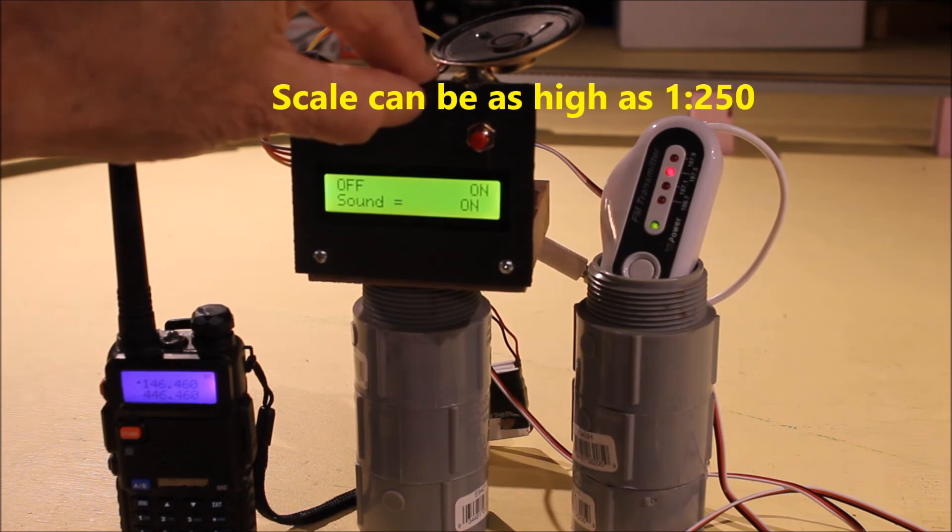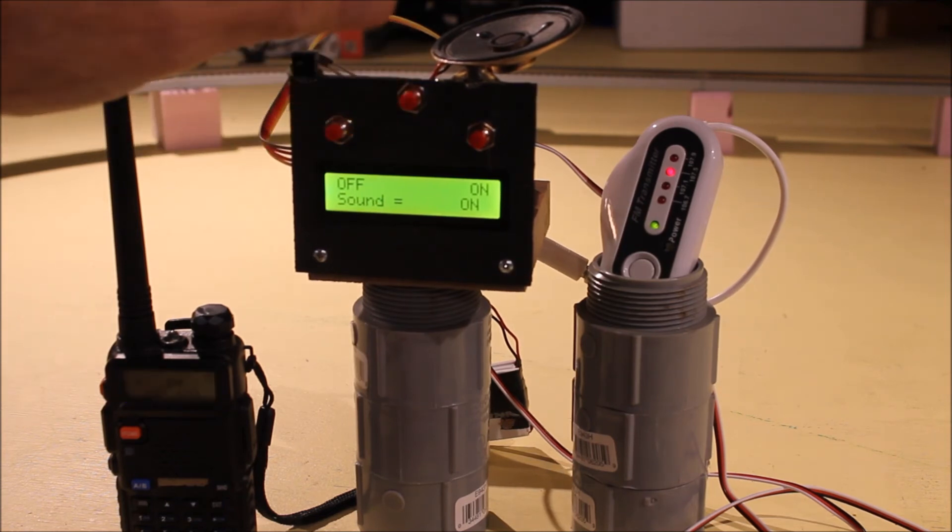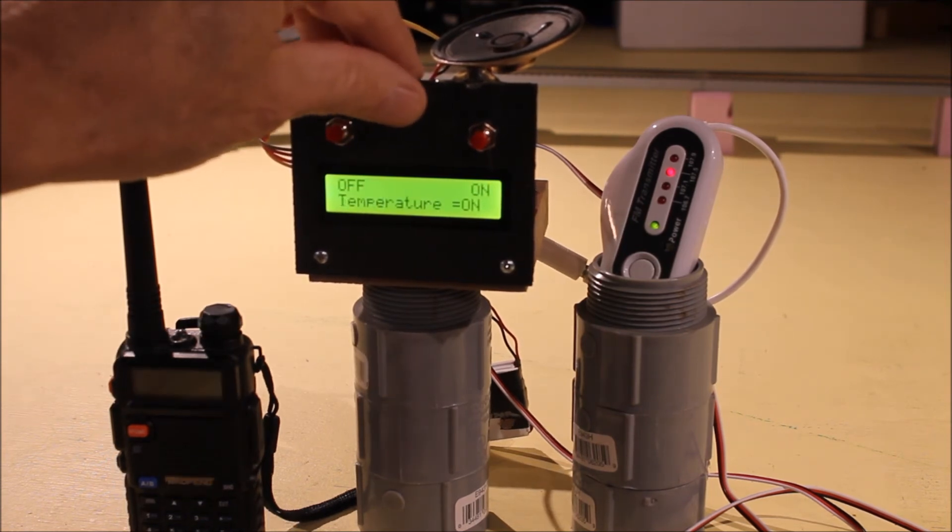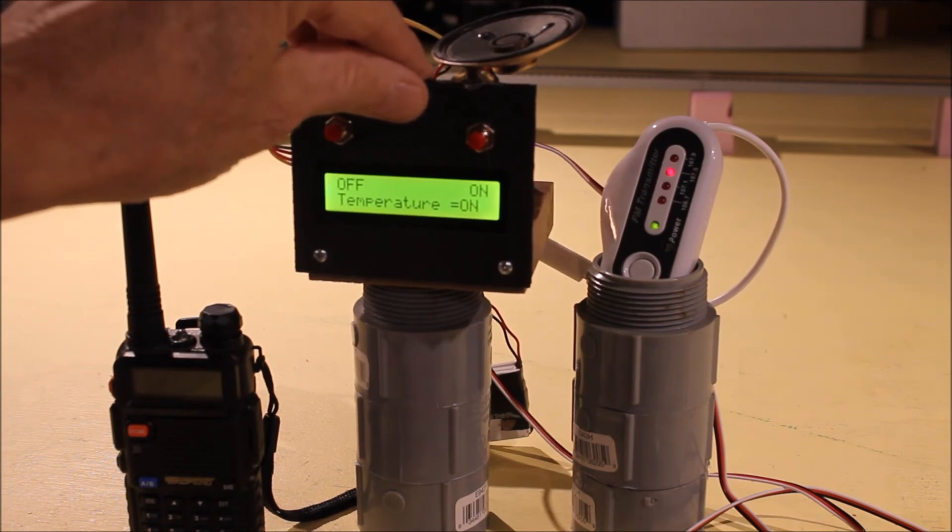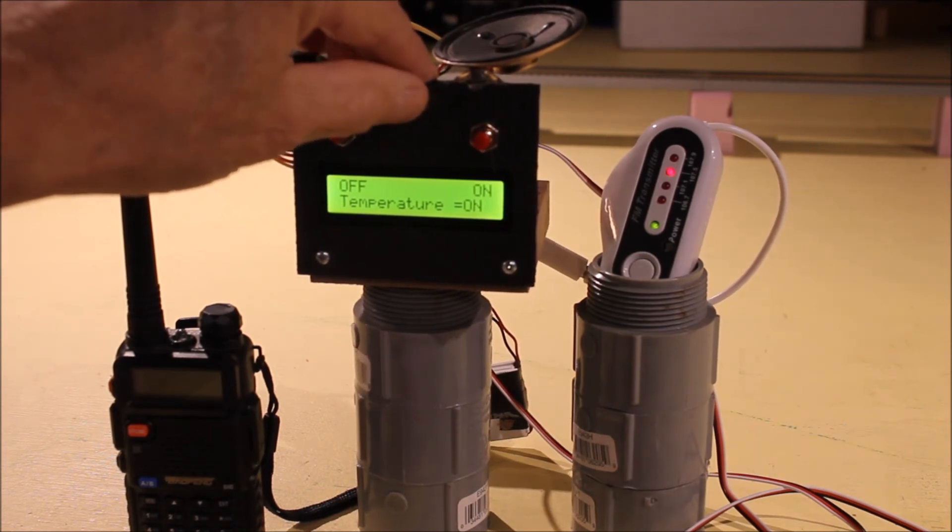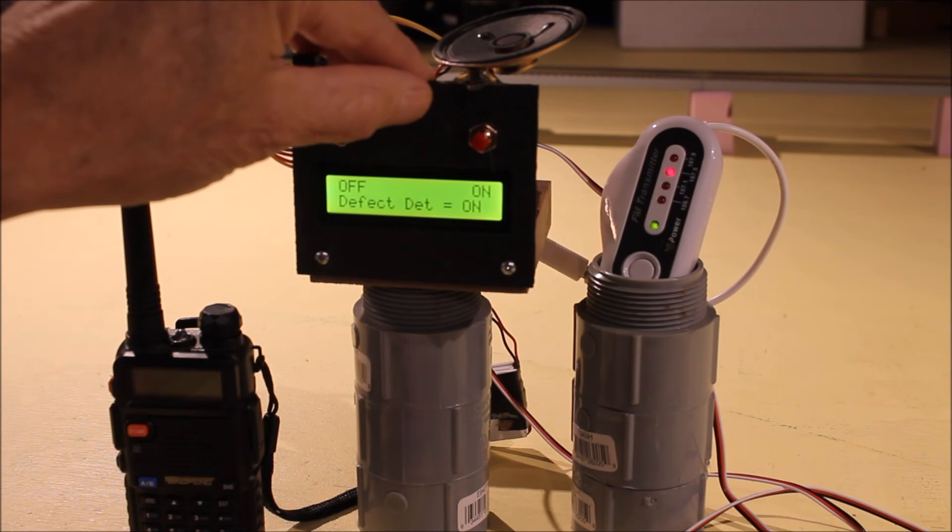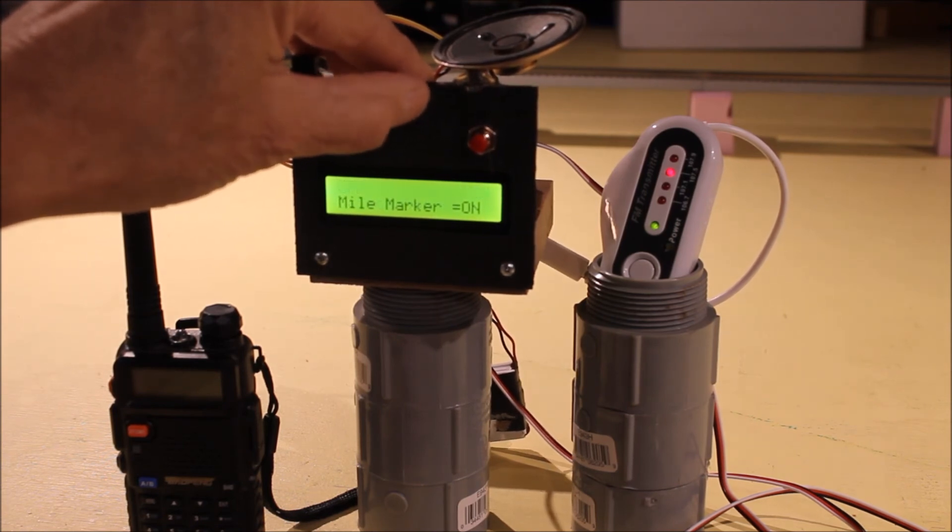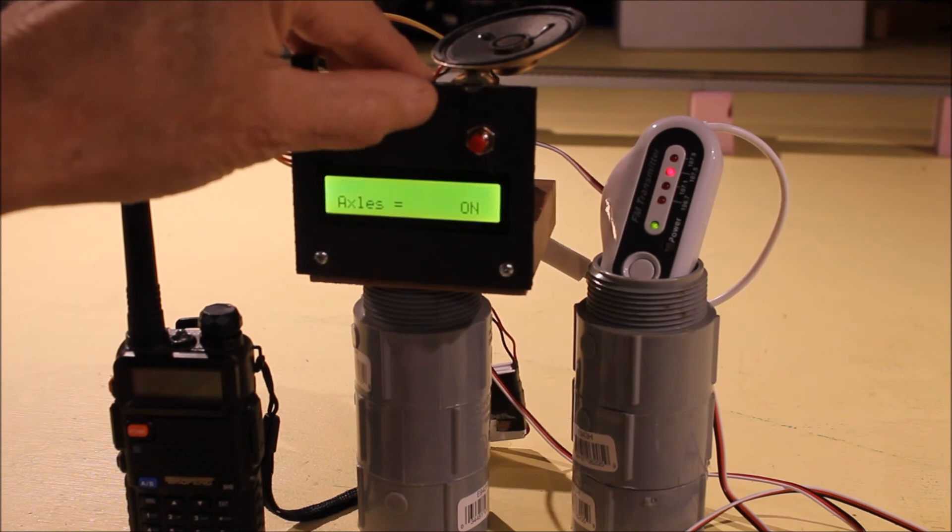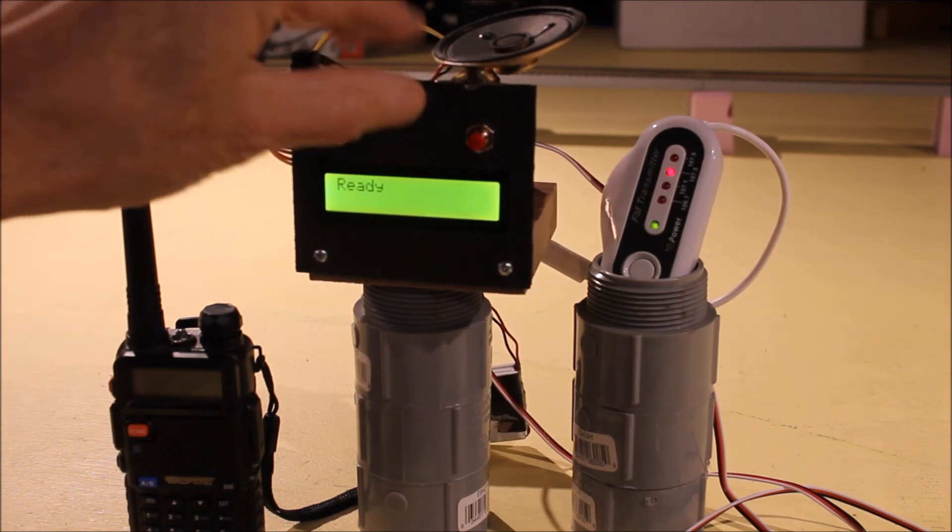The sound is on. If I wanted to turn it off I could just hit that. Temperature report is on. If I don't want to hear that simply turn it off. Length report is on, speed report is on, railroad name report is on, defect detector announcement is on, mile marker is on, number of axles is on, and now it's ready.